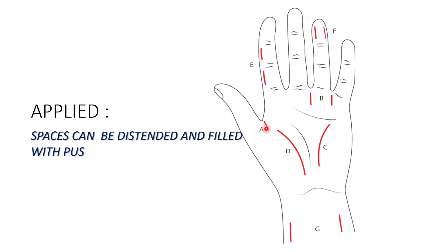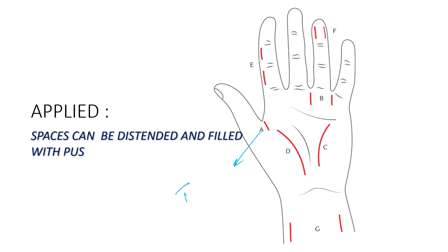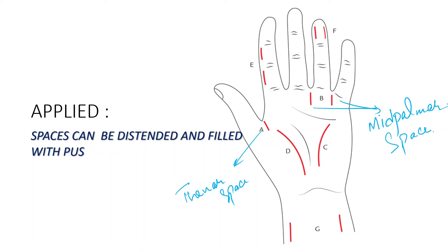During infection of the thenar space, the incision is mainly taken in the first web along the posterior aspect — this is the area where the incision has to be taken. In case of infection of the mid palmar space, the incision is taken between the third and fourth digit or the web space between the fourth and fifth digit. This is the important location for incision of infection involving the mid palmar space.